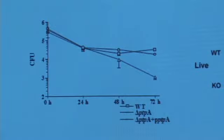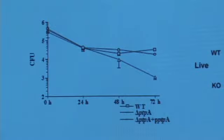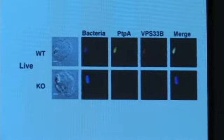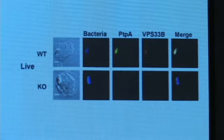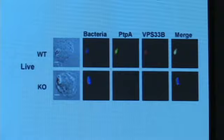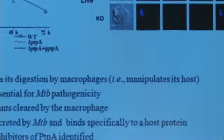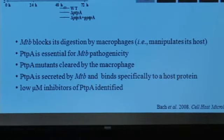Yossi's shown that this enzyme is secreted by the bacterium and it actually binds to a particular host protein that's involved in vacuole trafficking. Yossi has identified some inhibitors of this tyrosine phosphatase that have KIs in the low micromolar range.